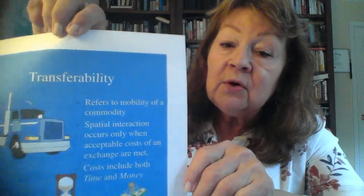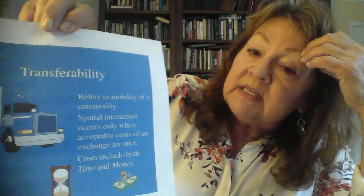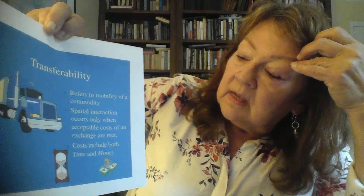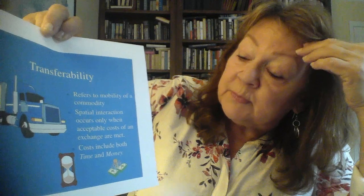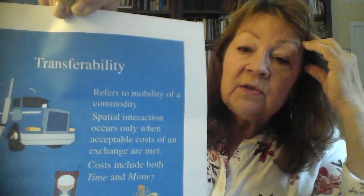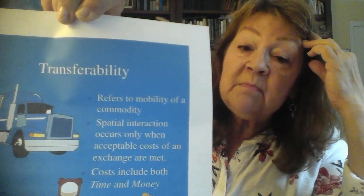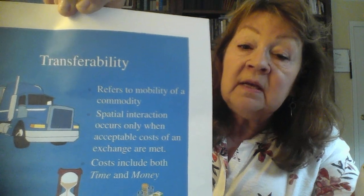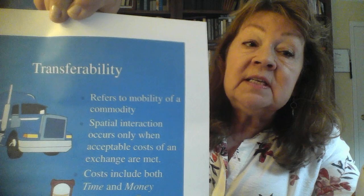Transferability refers to the mobility of a commodity. Spatial interaction occurs only when acceptable costs of an exchange are met, and those costs include both time and money. Using our Disneyland trip example, we need to know how many people are going and the amount of time available for the trip, including both travel time and time at the destination. If only one person is traveling and they need to travel the same day, then flying is probably the best way — it's quicker and you can get there and back very effectively and affordably.